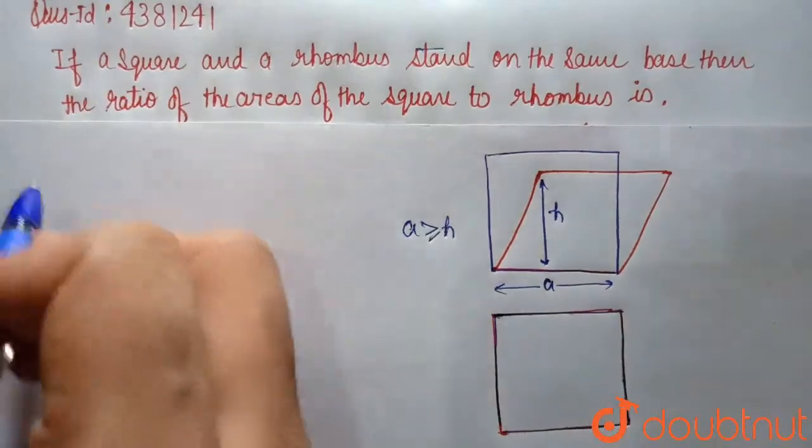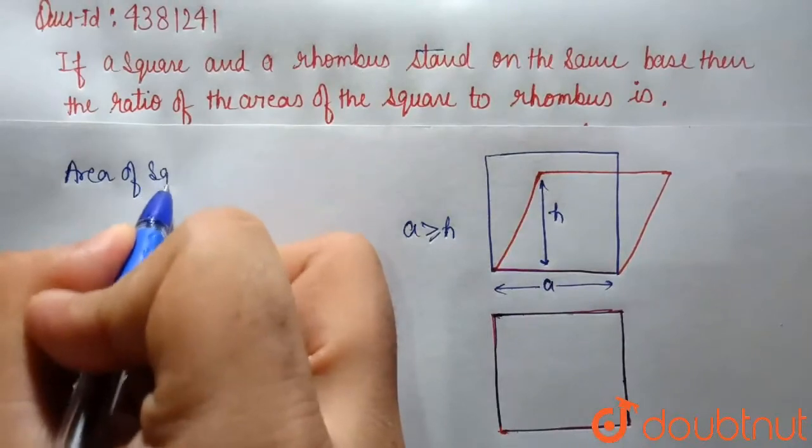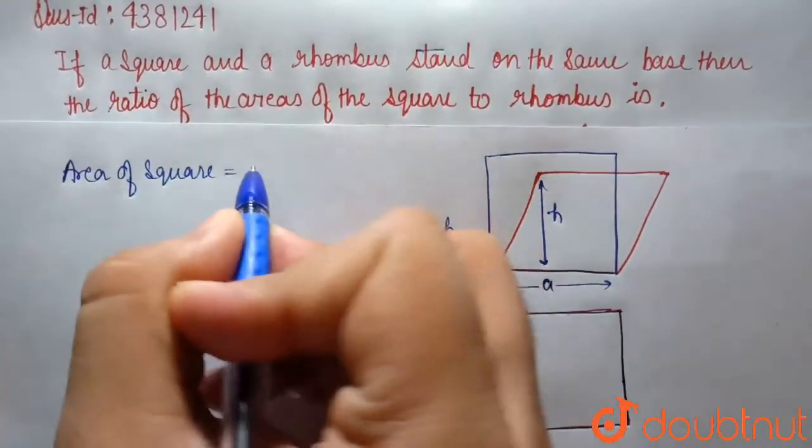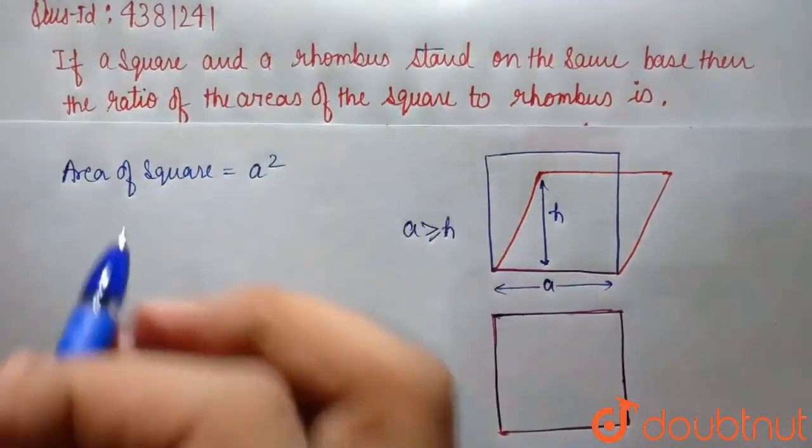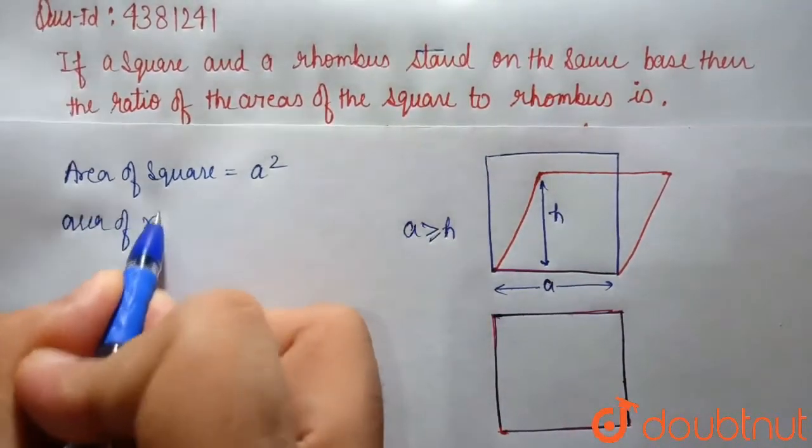Now we know that area of square is equal to A squared, just side multiplication.